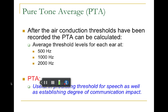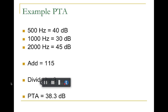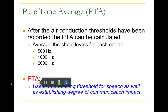You can compare the pure tone average to the speech recognition threshold, which we'll cover in the next chapter. Here's an example: if a person's threshold at 500 Hz is 40 dB, at 1000 Hz it's 30 dB, and at 2000 Hz it's 45 dB, you add up those three thresholds and divide by three to get the pure tone average. You must do this separately for the right ear and the left ear — adding up the thresholds at 500, 1000, and 2000 Hz for each ear and dividing each by three.